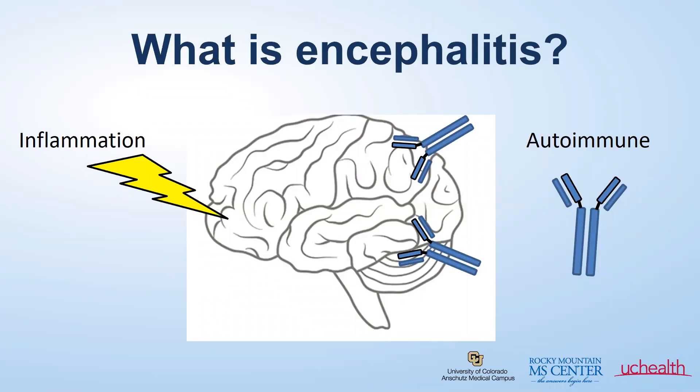We've reviewed in a prior episode of autoimmune encephalitis what encephalitis is. As a brief recap, encephalitis is inflammation that directly affects the tissue of the brain. This often causes symptoms of memory or cognitive dysfunction, personality changes, and sometimes seizures. This inflammation can be caused by different reasons, with the two most common forms being from infection or autoimmune disease.